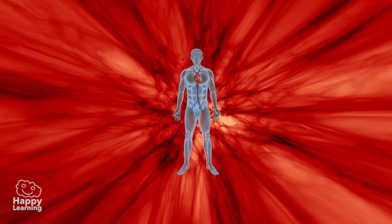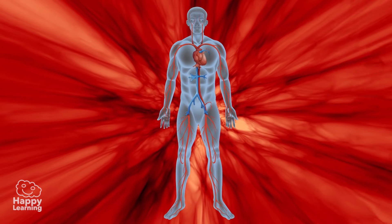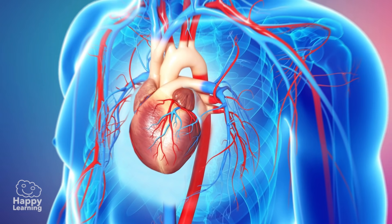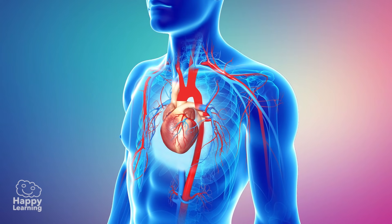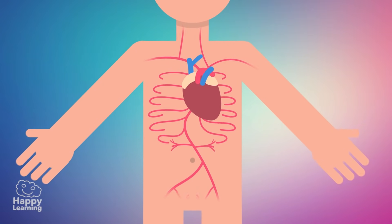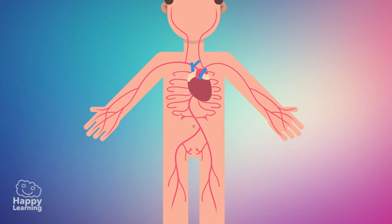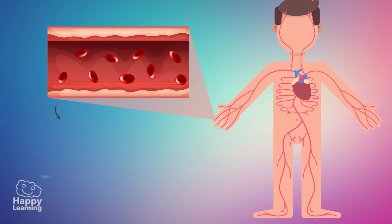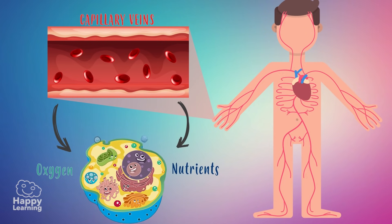We're going to start a journey through the circulatory system so we can understand it much better. The journey of blood begins in the heart. With the pulsations of the heart, the blood comes out through one of the greatest highways of the circulatory system called the aorta. From that moment, blood flows through our body through many veins. During this trip, the blood is delivering oxygen and nutrients to the cells through the capillaries.